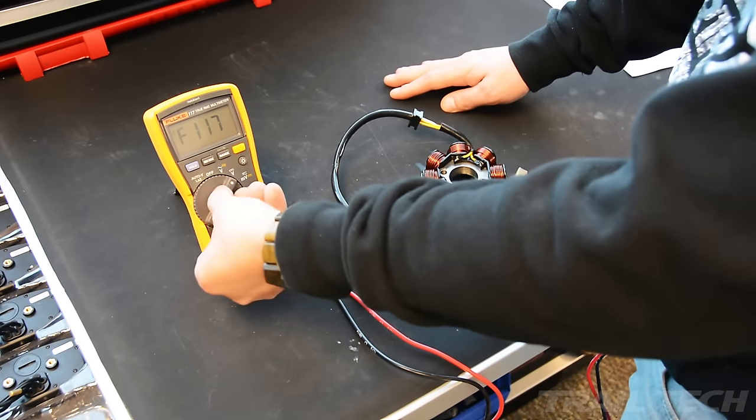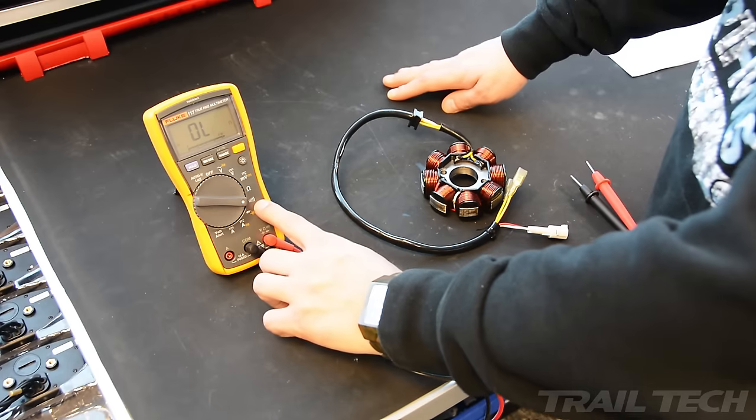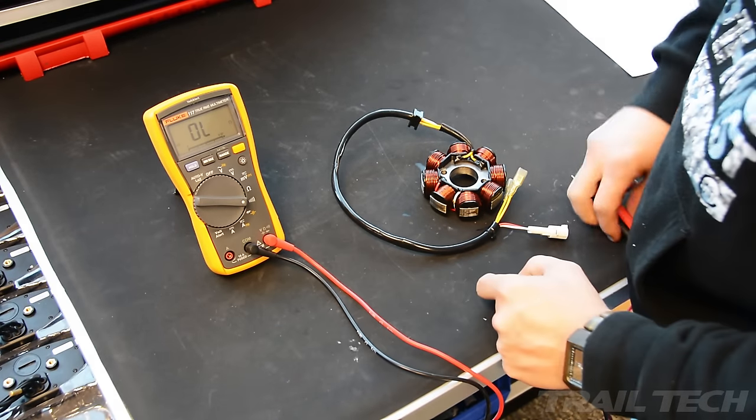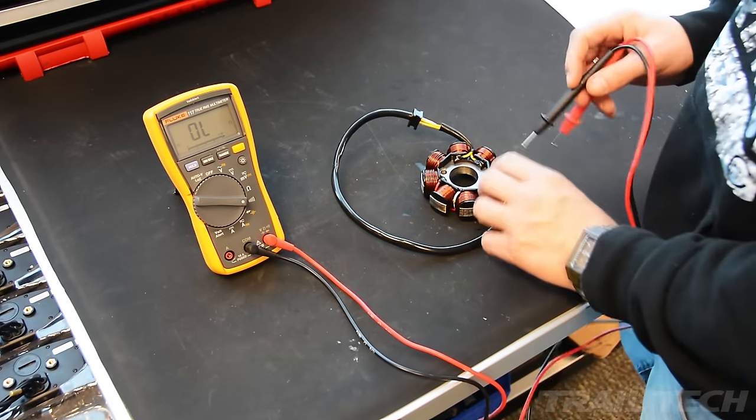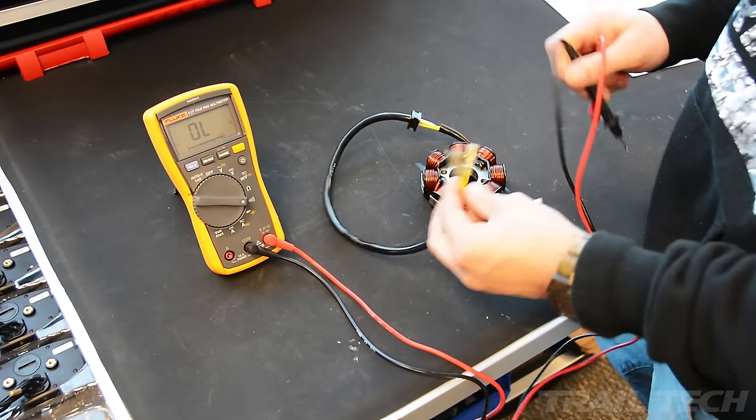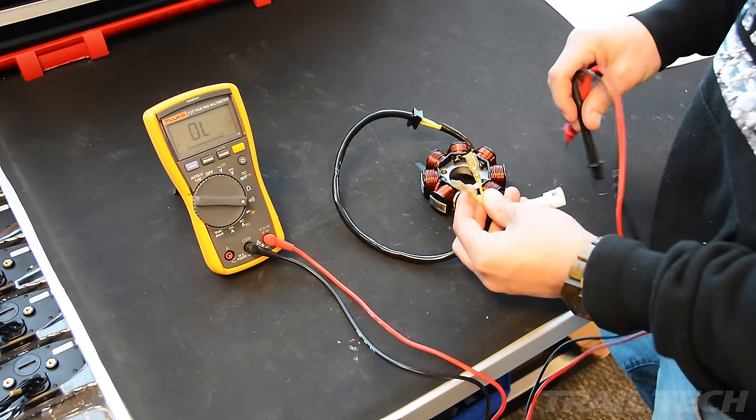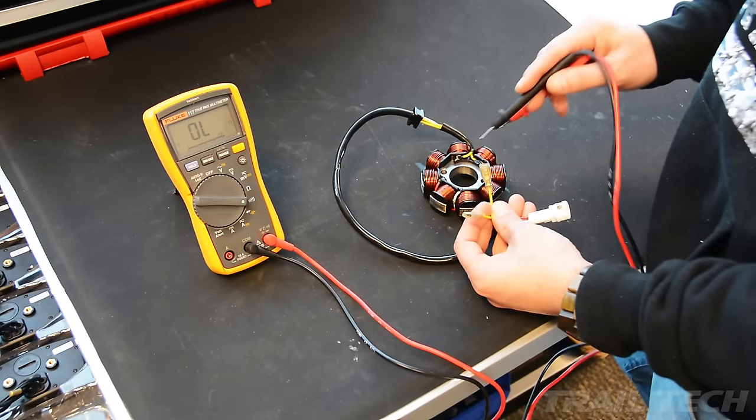First thing to check is continuity. You're going to set your meter to the audio symbol. And what we're looking for is to hear a beep between a circuit. So the two yellow wires are what we're going to test first. This is your lighting output.